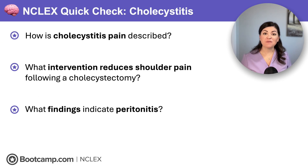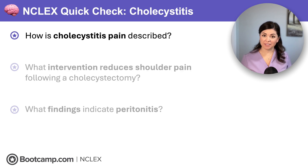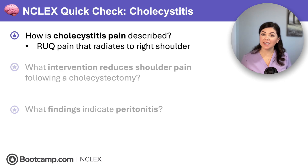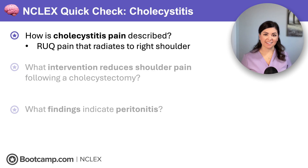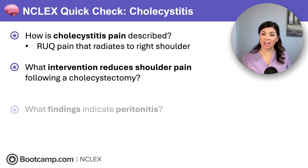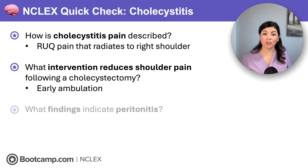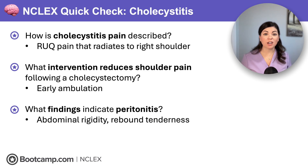NCLEX Quick Check: How is cholecystitis pain described? Right upper quadrant pain radiating to the right shoulder — the gallbladder is on the right side, so the pain is on the right side. What intervention reduces shoulder pain following a cholecystectomy? Early ambulation, which helps absorb and expel the CO2 gas used during the procedure. What findings indicate peritonitis? Abdominal rigidity and rebound tenderness — anytime you see this on the NCLEX, it is an emergency requiring immediate intervention.